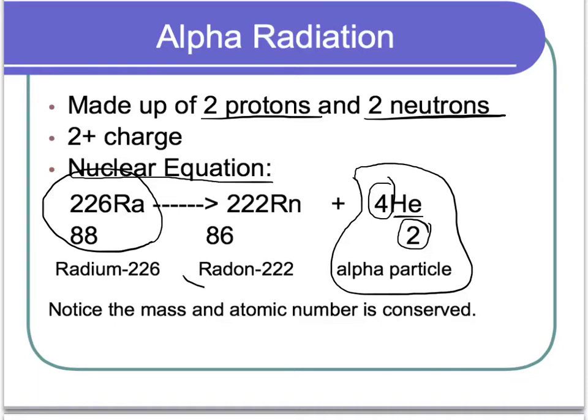And then the other thing that we have left over is now radon. And you can kind of see which element is going to be formed whenever you have radiation happening. Because if you look on there,